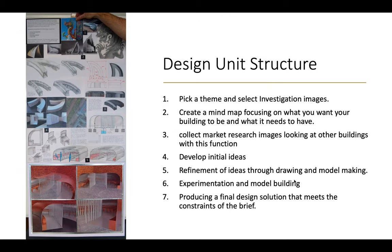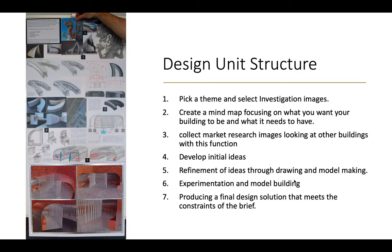The structure of the design unit is as follows. You're going to start by picking the theme and selecting investigation images for it. You're going to create a mind map focusing on what you want your building to be and what it needs to have inside it. For example, if it was a cafe, it would need seating, a small kitchen, possibly toilet facilities, running water, and electricity — all the things that a building must have.